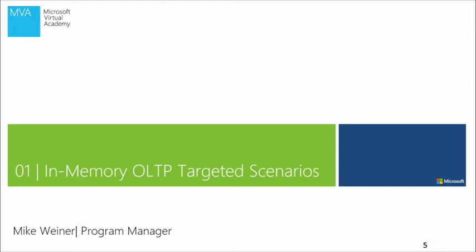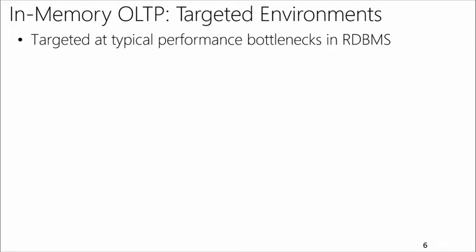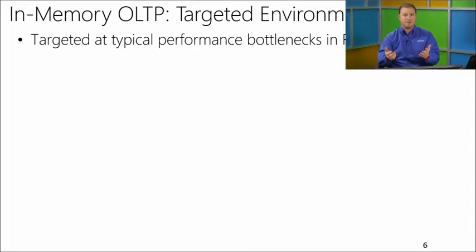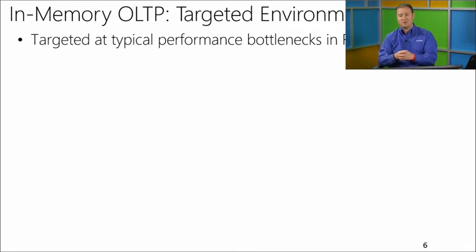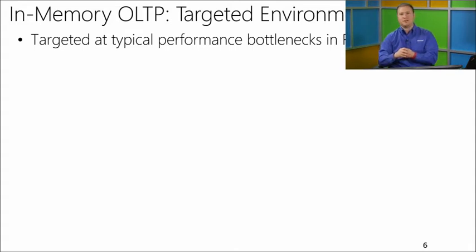Let's start with in-memory OLTP target scenarios. In-memory OLTP as a technology with SQL Server 2014 is really targeted at typical performance bottlenecks in the relational database management system. When you implement the in-memory OLTP engine, the first building block is memory optimized tables, which give you unique index structures focused on OLTP characteristics — for example, hash indexes, as well as non-clustered range indexes. When you implement these tables, common bottlenecks in high-throughput RDBMS — latching and locking — are addressed. Memory optimized tables provide multi-version optimistic concurrency control, using row versioning instead of latching and locks.